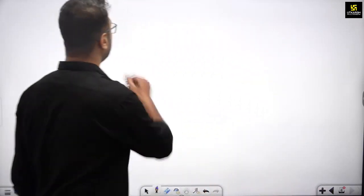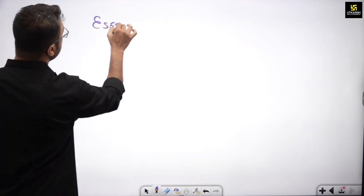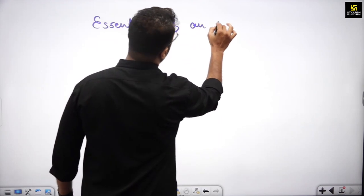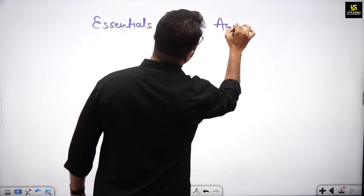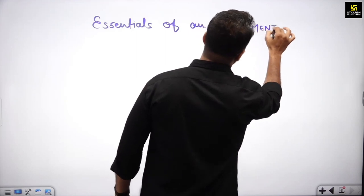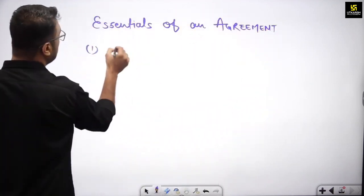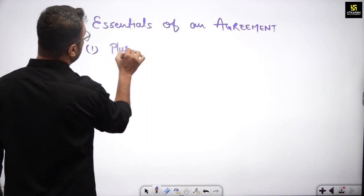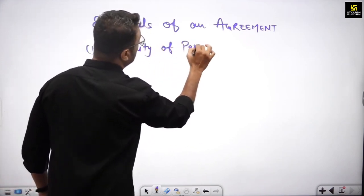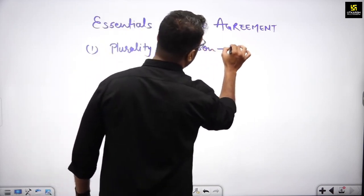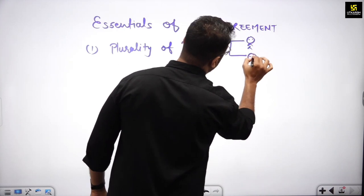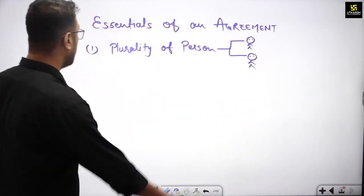Now let me tell one more thing — listen very carefully my friends. Essentials of an agreement. Are there some essentials to form an agreement? Absolutely, 100% yes. The first point is: plurality of persons — meaning, to form any agreement, there must be at least two persons; without that, an agreement will not be formed.